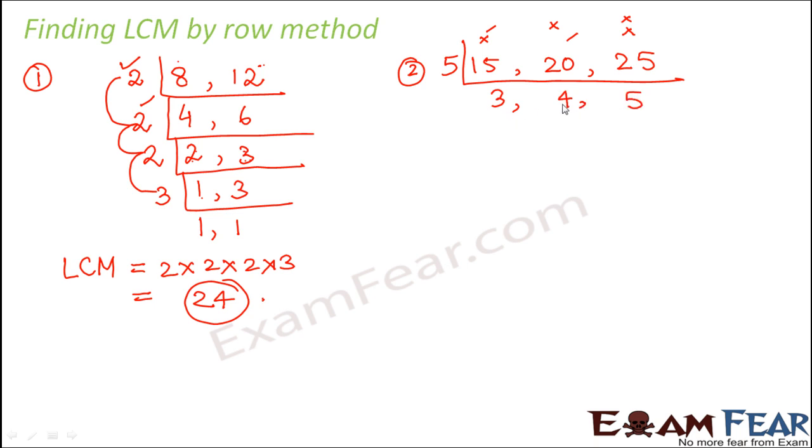So now you have 3, 4, 5. So you take any of these numbers, it will not divide all of them, right? Because these are consecutive numbers. So they will not be divisible by any common number. So let's say we choose 3. So 3 times 1 is 3. This would remain 4. This would remain 5. Now let us choose 4. So this would remain 1. This would be 4 times 1 is 4. 5 will remain 5. Now let us choose 5. So this would remain 1. This would remain 1. This would remain 1.